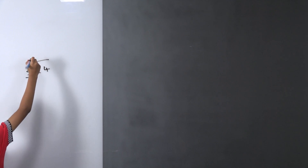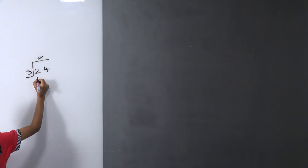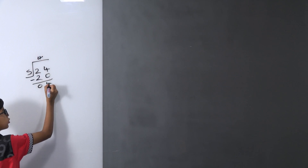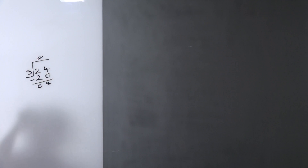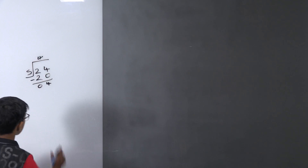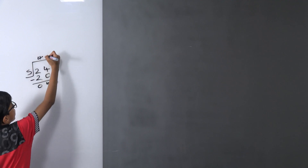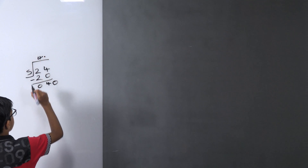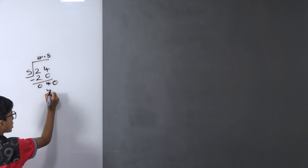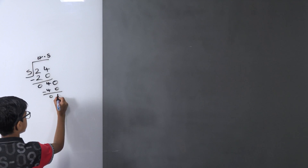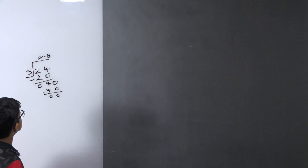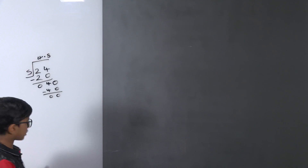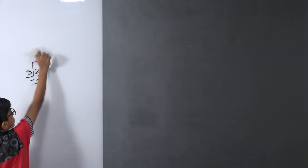5 fours are 20, so we subtract 20 from 24 and get 4. We can't divide 4 by 5, so we put a zero and place a decimal point. 5 eights are 40, so we subtract and get 0. The answer is 4.8. This is called terminating because it ends after the decimal point.